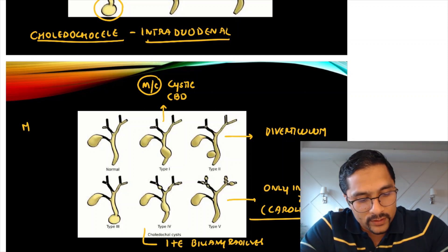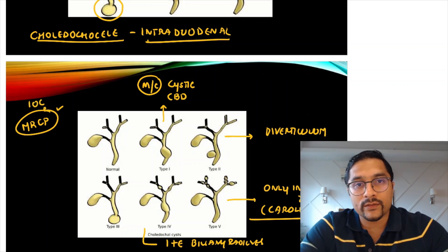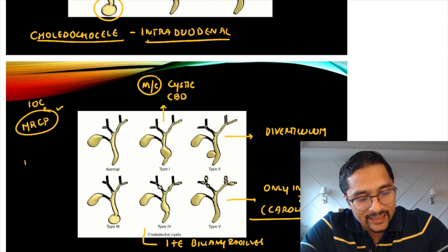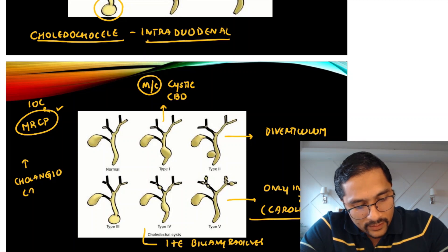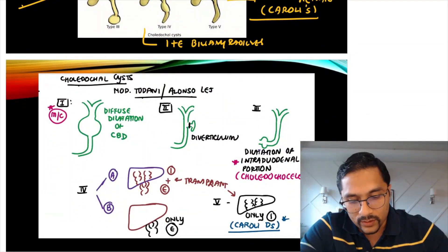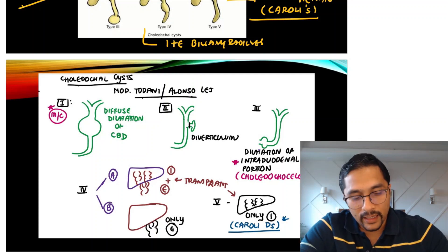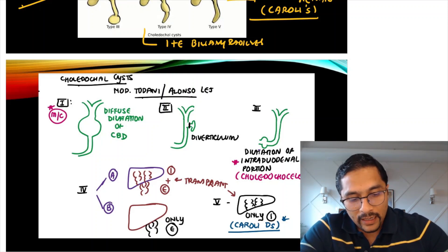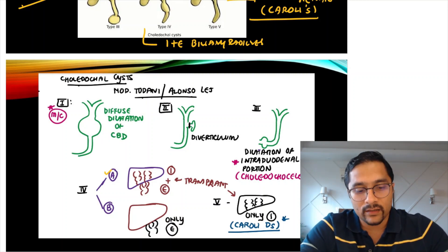The investigation of choice for choledochal cyst is MRCP — magnetic resonance cholangiopancreaticography. These choledochal cysts can increase the risk of cholangiocarcinoma. The most common type is type 1. Types 4A and 5 are the ones which require a transplant for treatment.